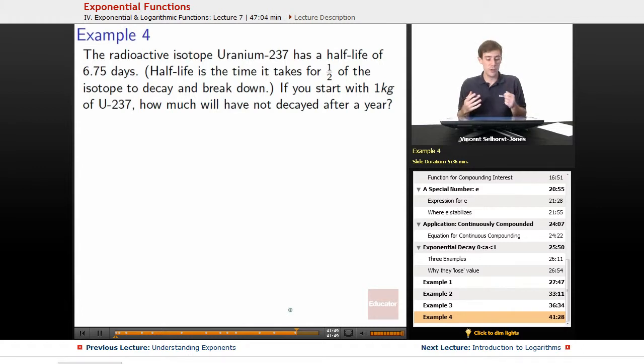If you start with one kilogram of U-237, how much will have not decayed after a year? So after 6.75 days we will have half a kilogram, right? We start with one kilogram and after every 6.75 days we will have lost half of our starting material. So we will be down from one kilogram to half a kilogram that has not decayed. Let's see if we can figure out a way to turn this into another function.